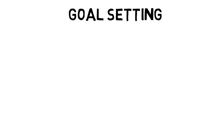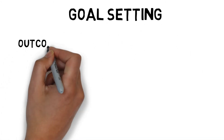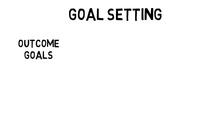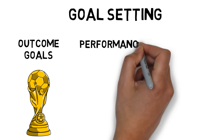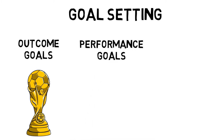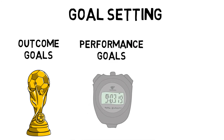There are different types of goals that can be set. Outcome goals are concerned with the end result, such as win the league or win a cup. Performance goals are concerned with how good a performance was, comparative to previous performance, such as a personal best time.